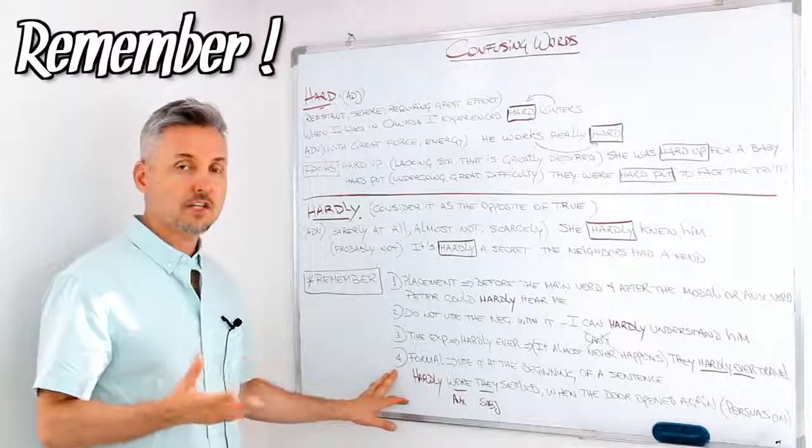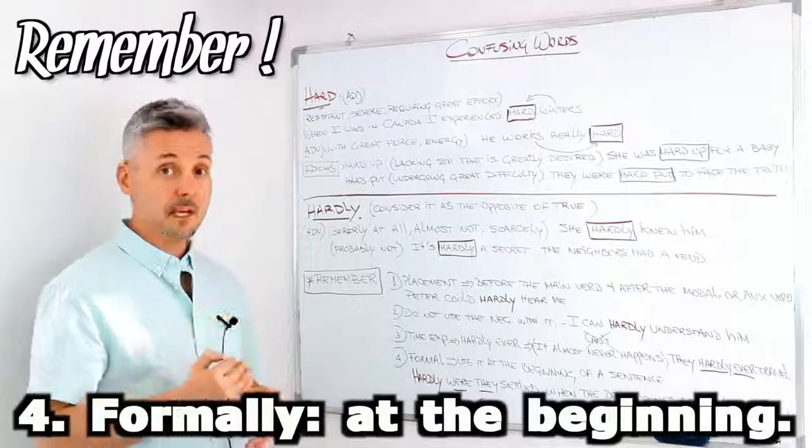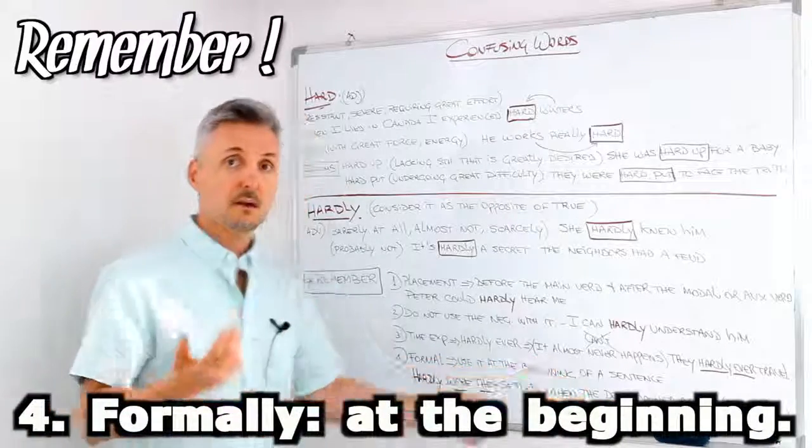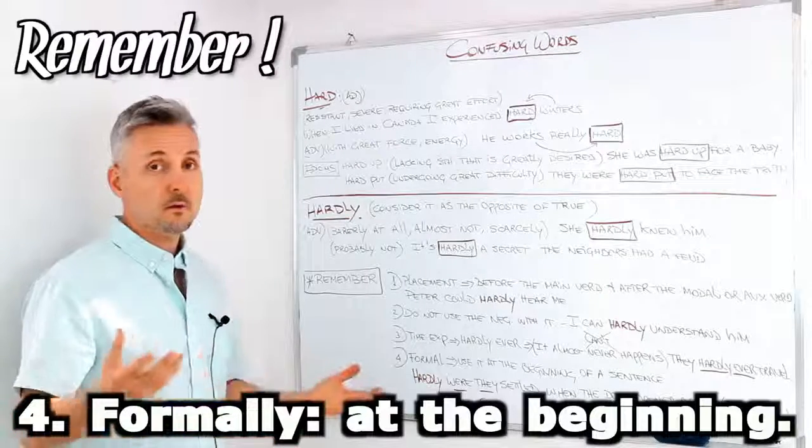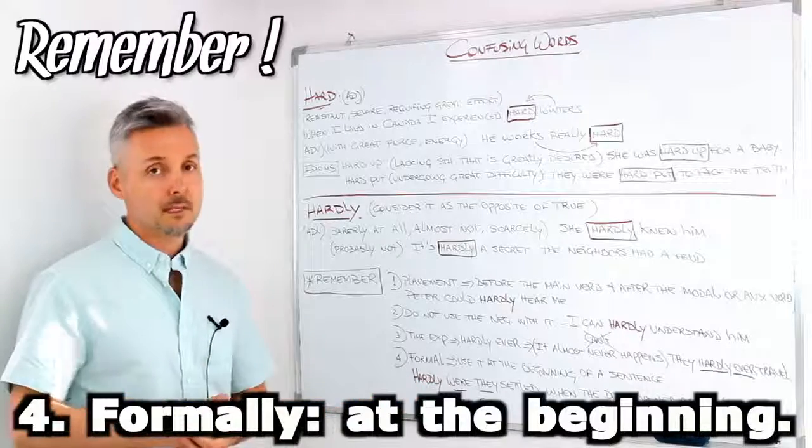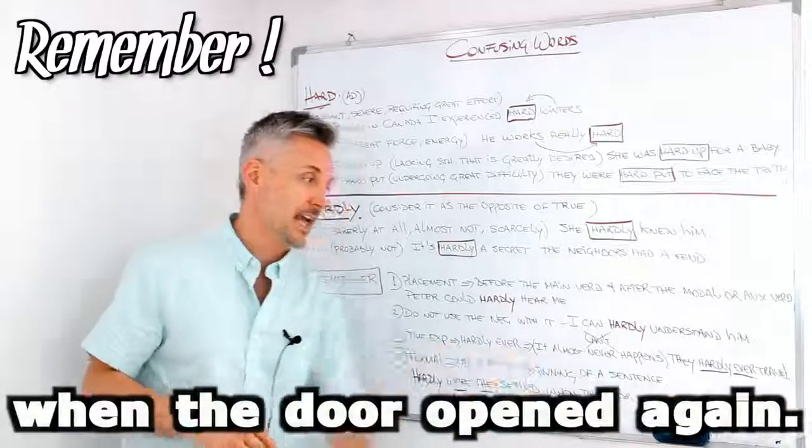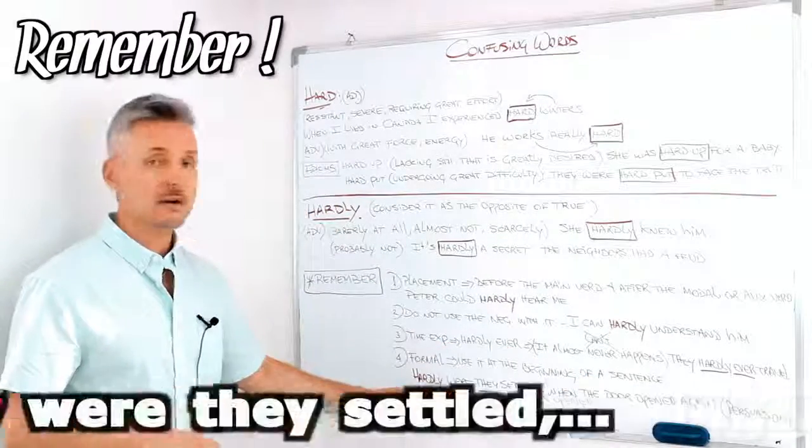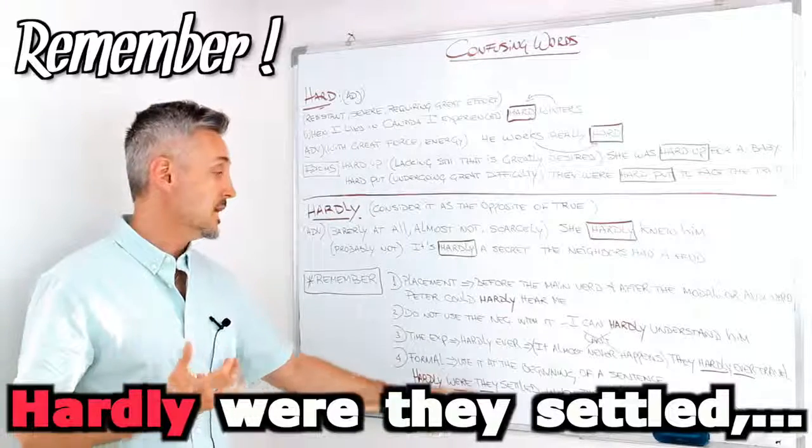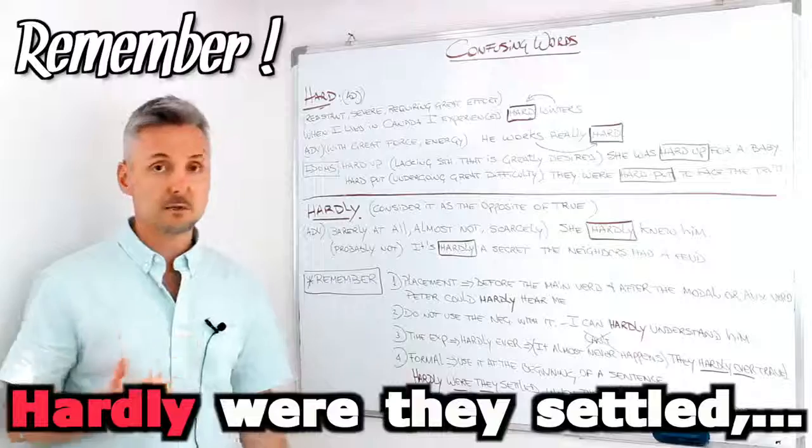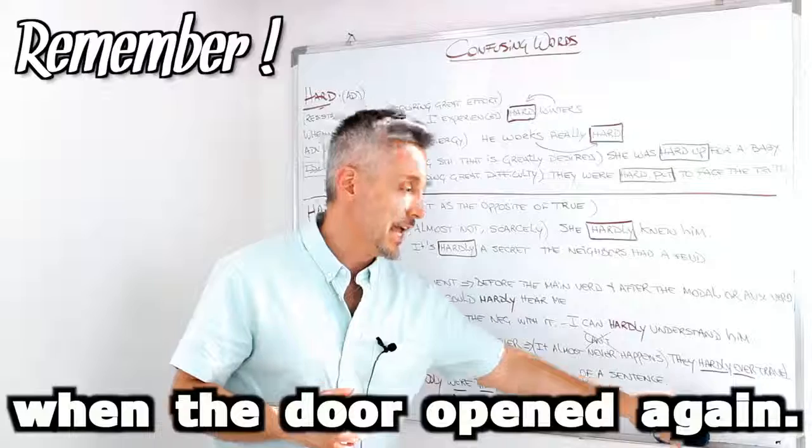The last point that I want to mention is for formal contexts. We use hardly at the beginning of a sentence. For example, if you read Persuasion by Jane Austen, you would read this sentence. Hardly were they settled when the door opened again. Hardly here is at the beginning of the sentence. Then we need the auxiliary of the sentence and then the subject.